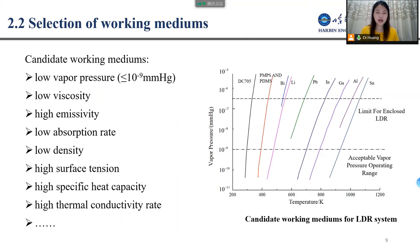As working mediums of LDRs, they should have low vapor pressure, low viscosity, high emissivity, low absorption rates, low density, and so on. For the space nuclear power system, the core outlet temperature reaches 1500 Kelvin, so the waste heat export temperature may reach about 850 Kelvin. The working mediums that can meet this temperature requirement are aluminum, indium, gadolinium, and tin. In this paper, we mainly calculate indium, alumina, and tin.